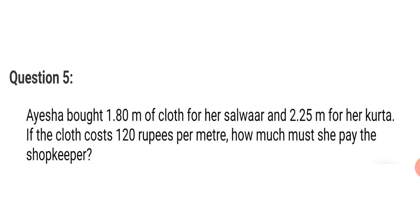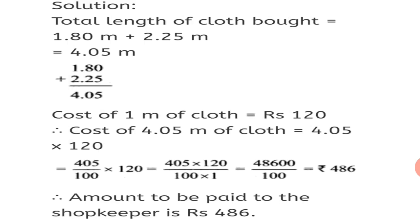Question number 5. Aisha bought 1.80 meter of cloth for her salwar and 2.25 meter for her kurta. If the cloth costs 120 rupees per meter, how much must she pay the shopkeeper? So, we will have to add the cloth that is required by her and multiply finally by 120. That way, we will come to know how much she has to pay to the shopkeeper. So, let's see the steps. Total length of cloth bought is equal to 1.80 meter plus 2.25 meter is equal to 4.05 meter. Working is shown below.